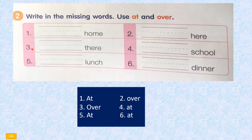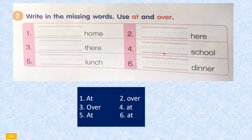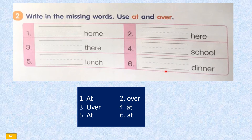Number three: over there. Number four: at school — write "at" here. Number five: at lunch — write this word "at", at lunch. Number six: at dinner.